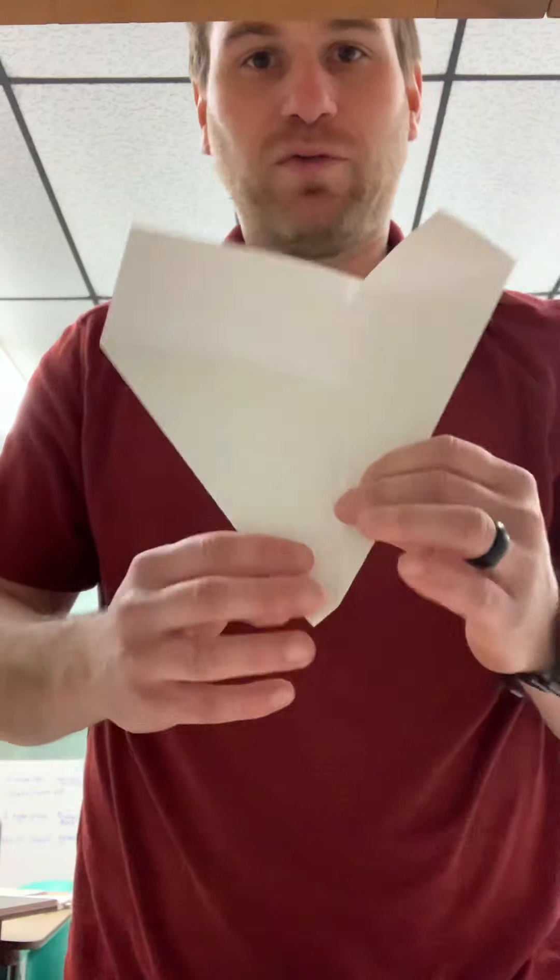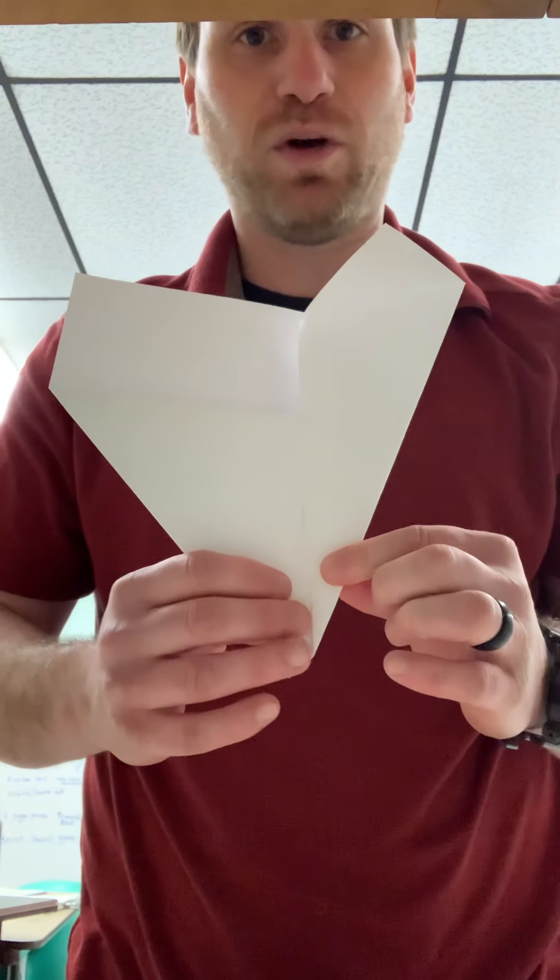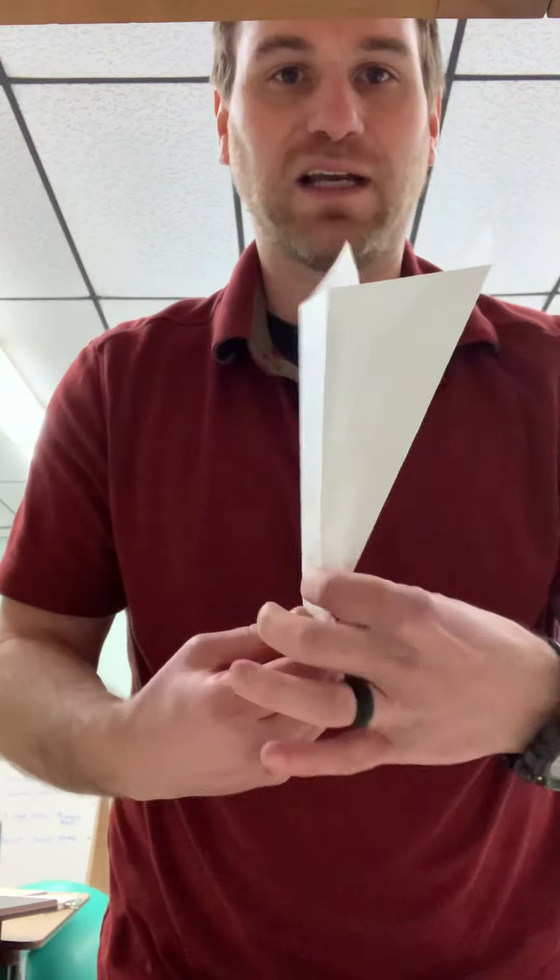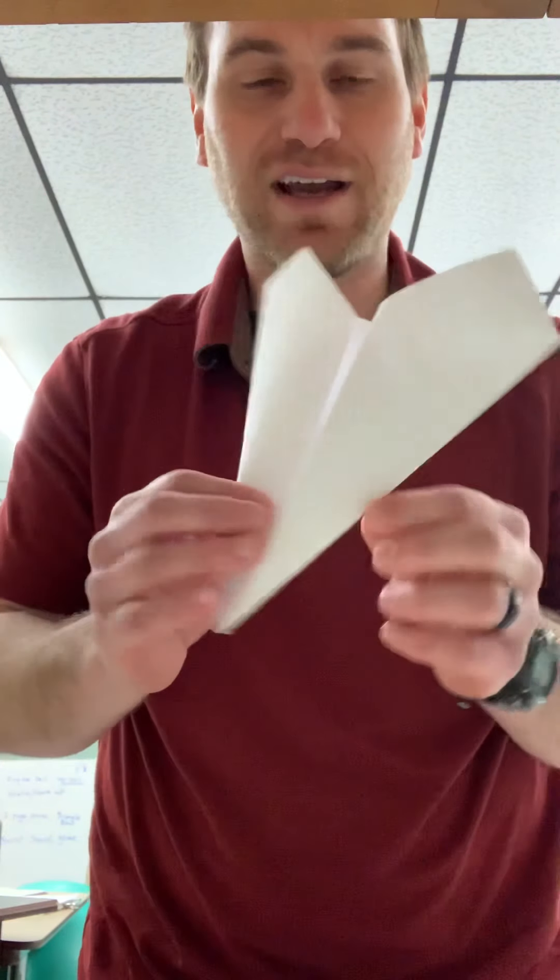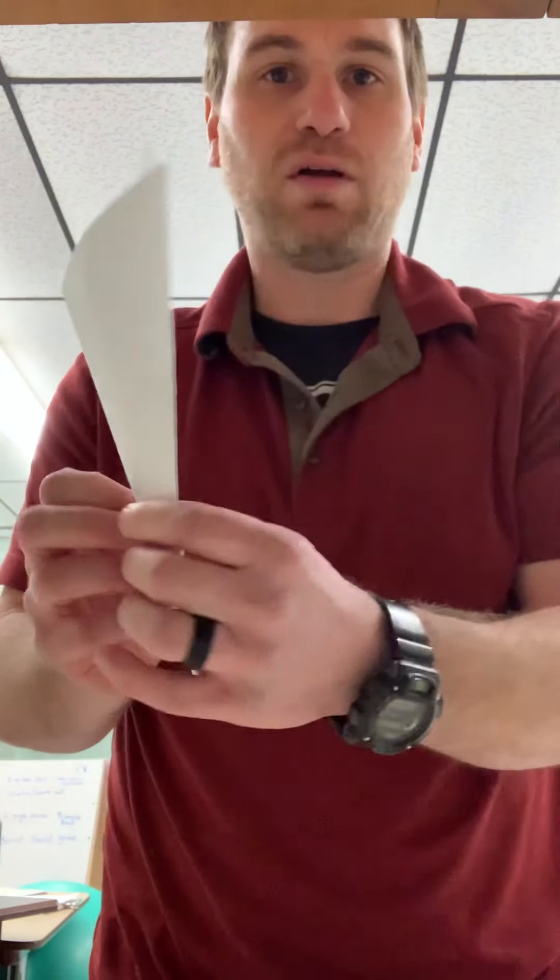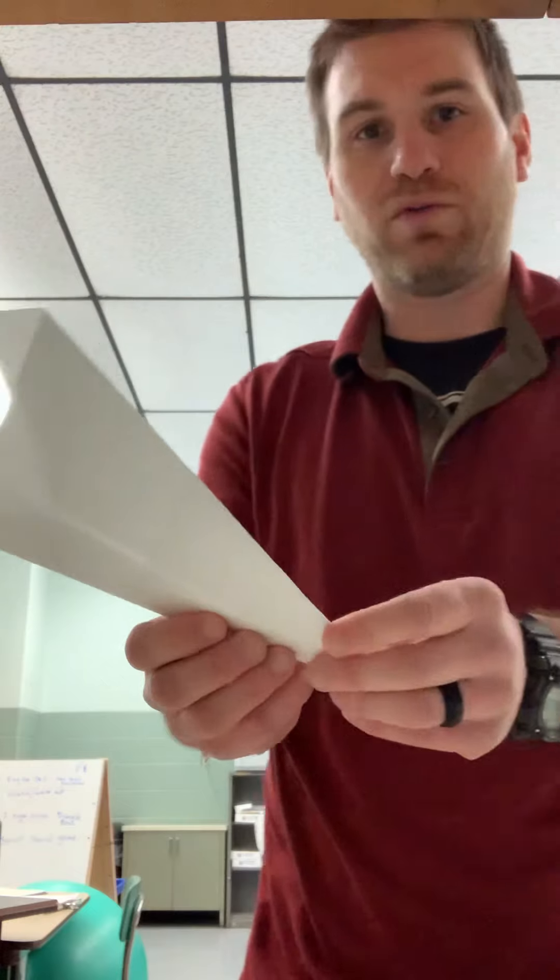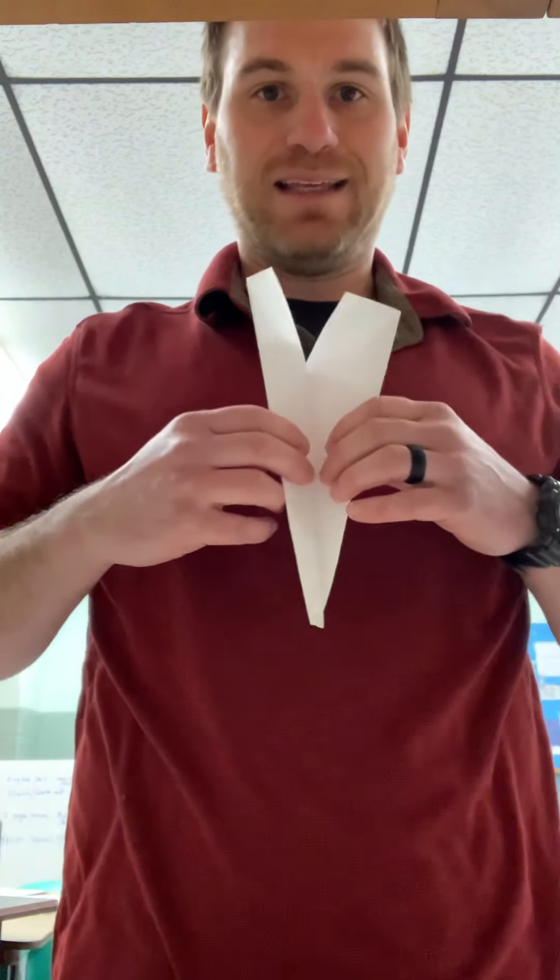So here we go. I'll crease my fold there, and there you go. So we're going to do that same thing on the other side. So it sort of looks like an ice cream cone or something, right? So we've got all those folds. We're going to fold into the middle.